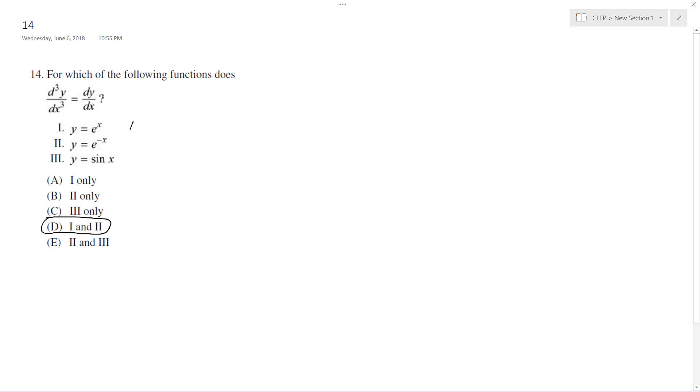The derivative of e raised to the x - you pull the derivative of x which is just 1, so you get e raised to the x. The second derivative d squared y dx is the exact same thing, you just get e to the x, and finally d cubed y dx is just equal to e to the x. So the first derivative is equal to the third.